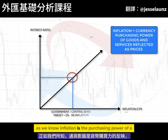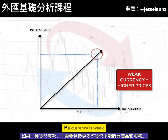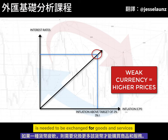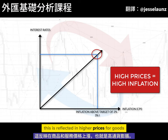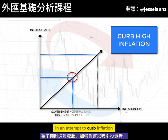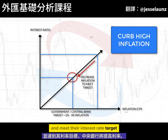Inflation is the purchasing power of a currency reflected as prices for goods and services. If a currency is weak, more of that currency is needed to be exchanged for goods and services. This is reflected in higher prices for goods and services, otherwise known as high inflation. In an attempt to curb inflation, strengthen the currency to attract investors and meet their interest rate target, central banks will raise interest rates.